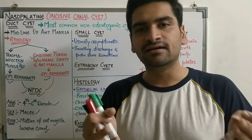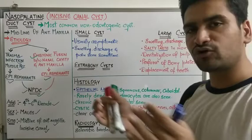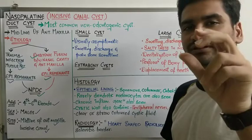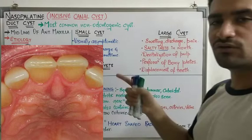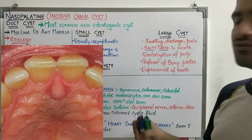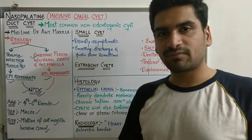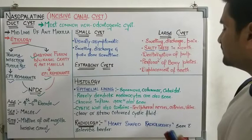Regarding clinical presentation, the size of the cyst can vary. Small cysts are usually asymptomatic with slight swelling of about three to four millimeters. They are mostly asymptomatic, though sometimes you may see swelling, discharge, and pain. The majority of recorded cases of small cysts are asymptomatic.